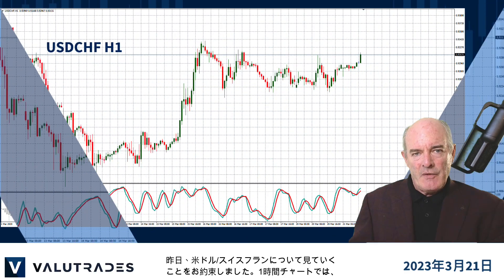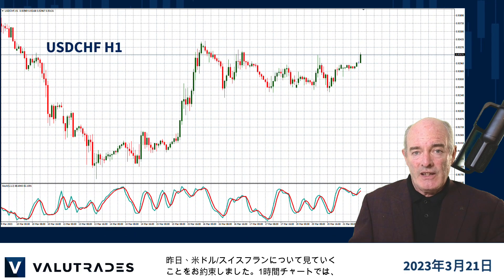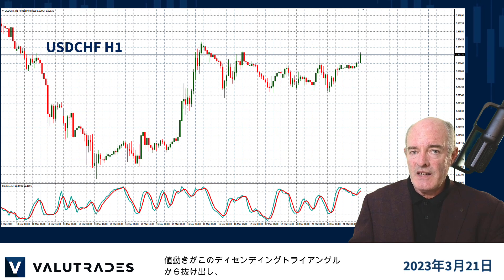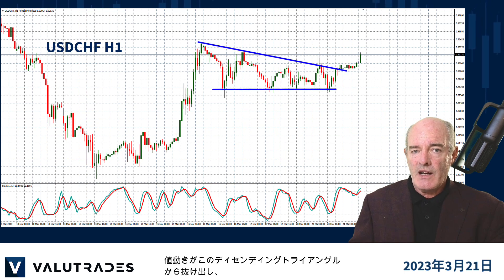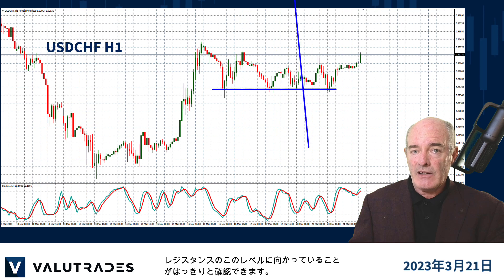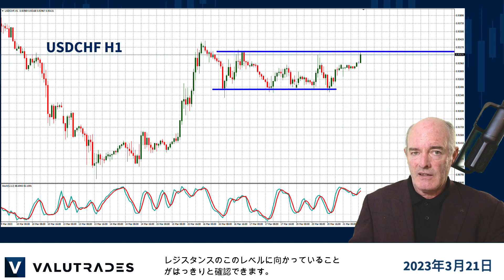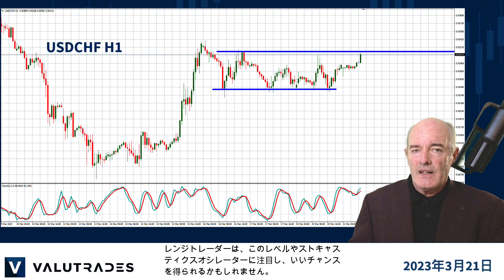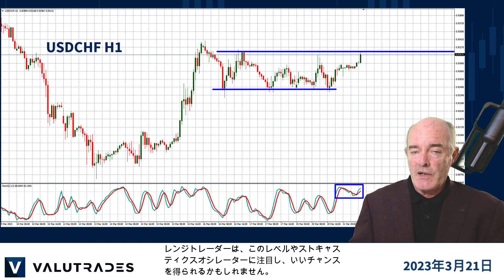Yesterday we promised to take a look at Dollar Swiss, and on the 1-hour chart we can clearly see that price action has broken out of this descending triangle and is heading back to this level of resistance. Keep an eye on this level and the stochastic oscillator as range traders might have some good opportunities here.